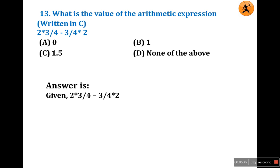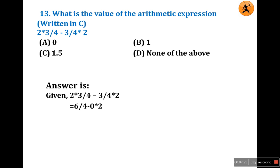Priority of multiplication and division is higher than addition and subtraction. Both multiplication and division are at the same priority level, so we solve left to right. First we perform the leftmost multiplication: 2 × 3 = 6.